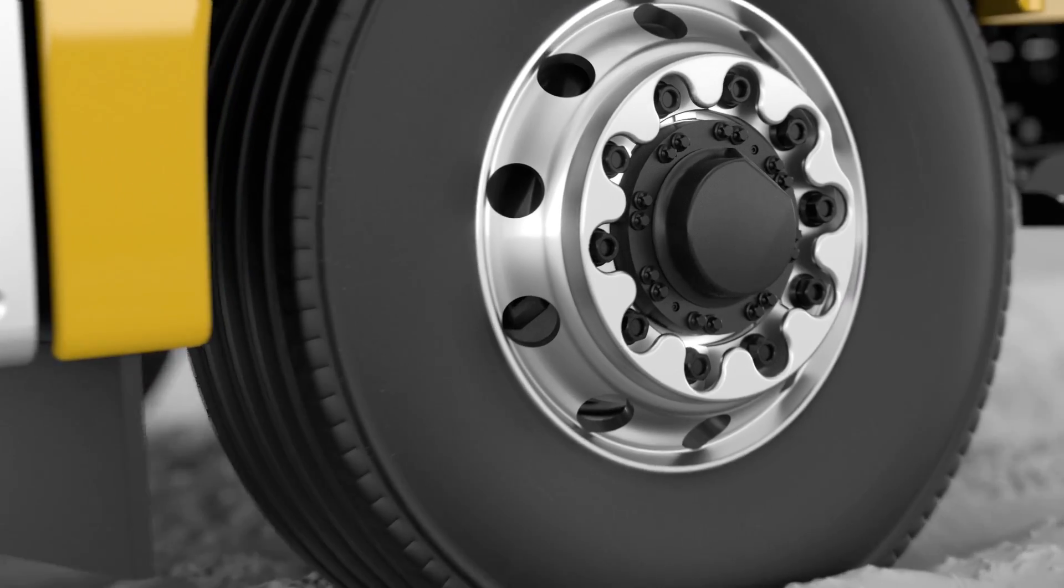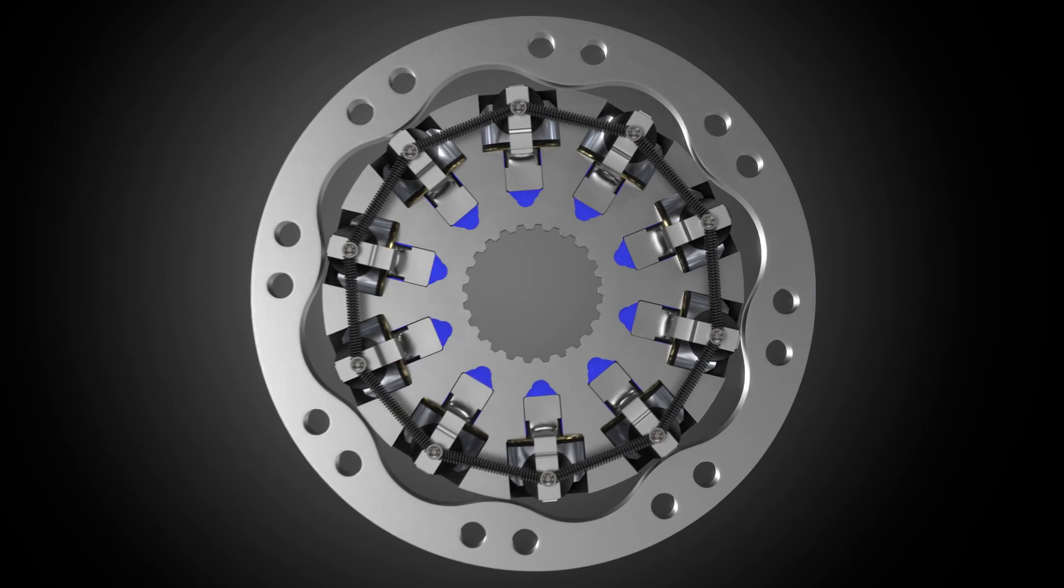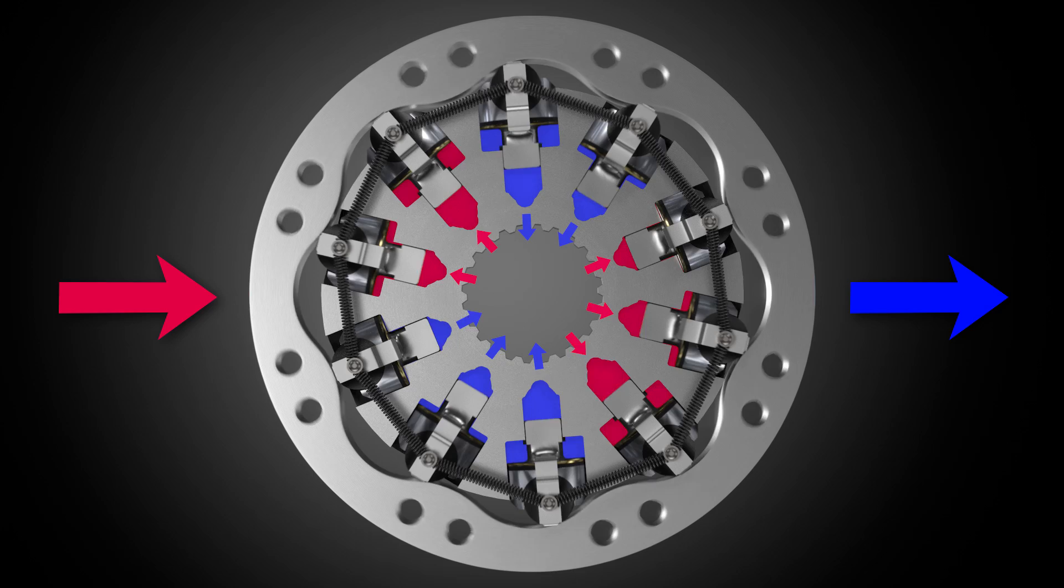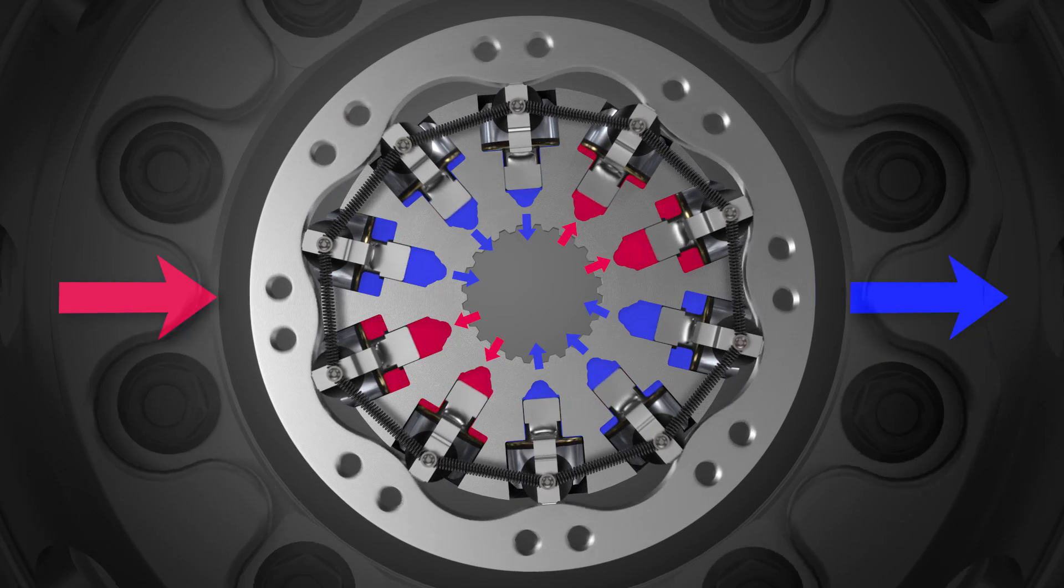At the heart of the hydrostatic wheel hub motors is a cylinder block with ten cylinders arranged in a star shape that is secured to the wheel hub. There are special pistons in the cylinders.